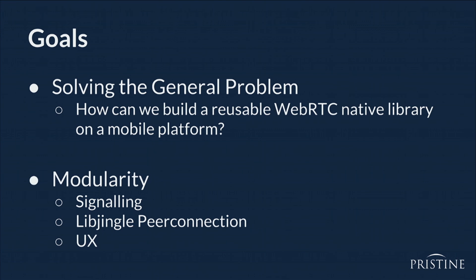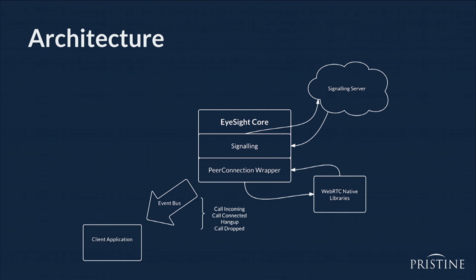We poured over the AppRTC code and broke it down into three major components. We have to have a signaling module that handles what we call the WebRTC dance to get a call up and running. Then we need a wrapper to interact with the native libraries. And in addition to that, we have to build a client-specific UX for each platform. Here's a bird's-eye view of the core in action — it's composed of two components. The signaling component interacts with our signaling server, relaying ICE candidates, offers, and answers across the line. And we have our peer connection wrapper that mediates communication between our application and the native APIs. Collectively, these two work together to push out very client-consumable events for each application.